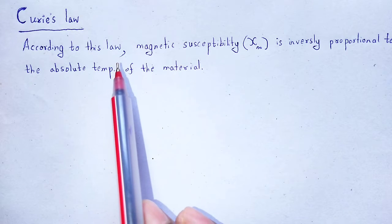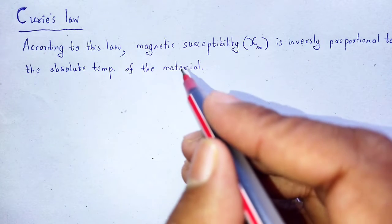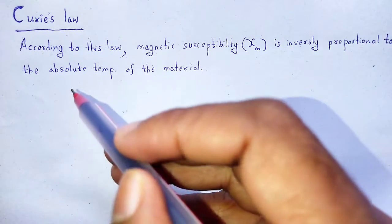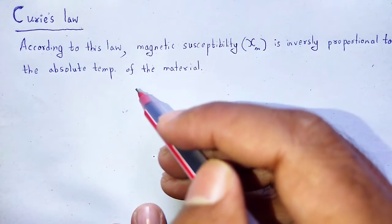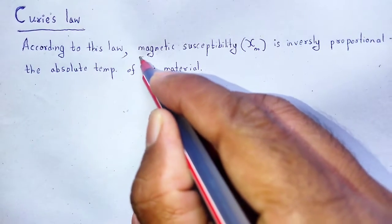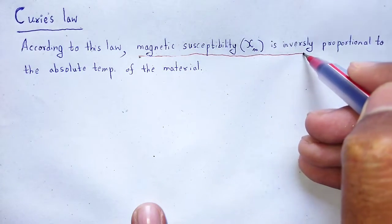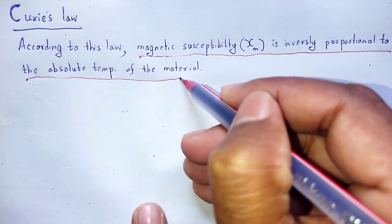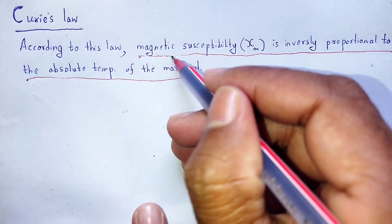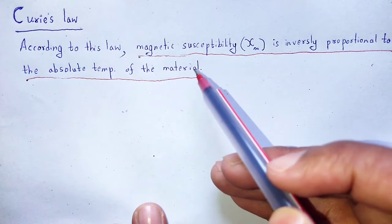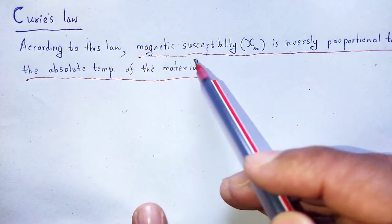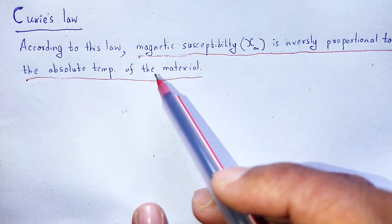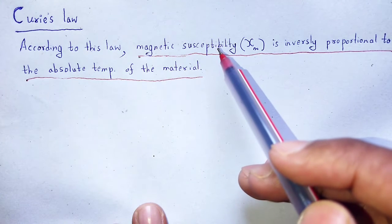According to Curie's law, magnetic susceptibility χm is inversely proportional to the absolute temperature of the substance. If temperature increases, then magnetic susceptibility decreases. If temperature decreases, then magnetic susceptibility increases.